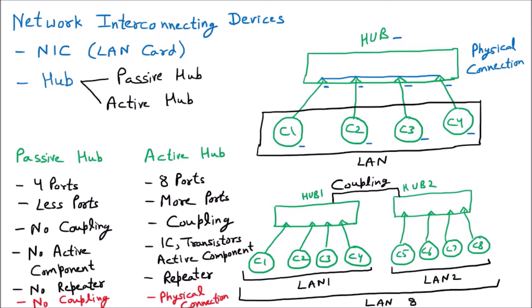Now suppose C1 wants to communicate with C3. C1 starts transmitting data through its Ethernet cable to its port. At the same time, C4 wants to communicate with C2 and also starts sending data through its port. Since all ports share a single wire — the physical connection — both data packets travel on the same wire simultaneously. At the collision point, there will be a collision.